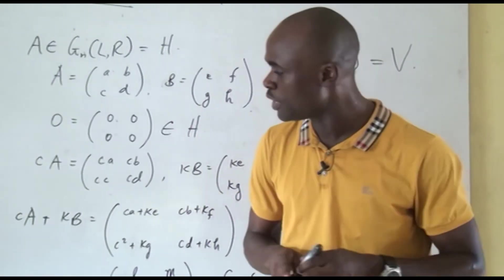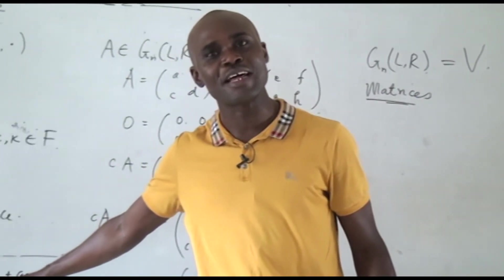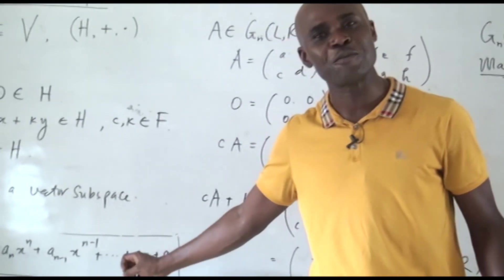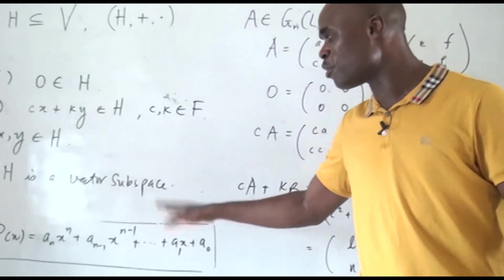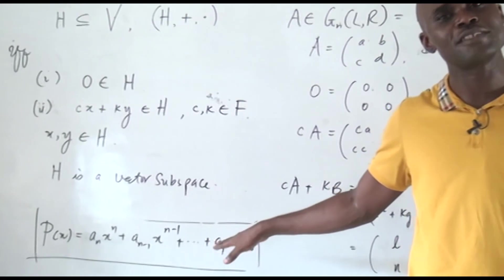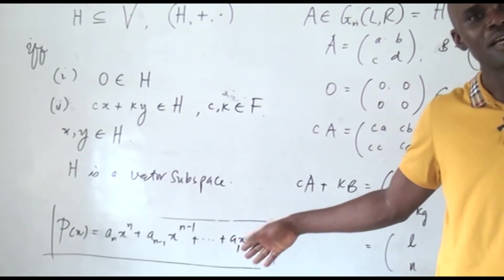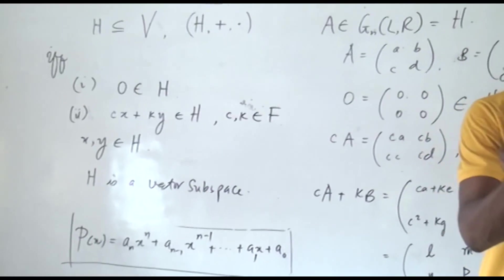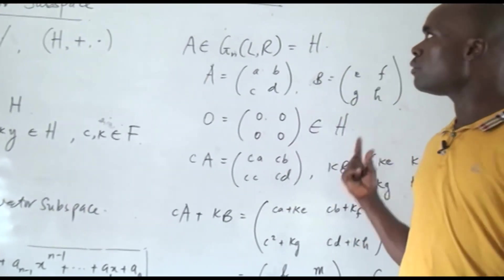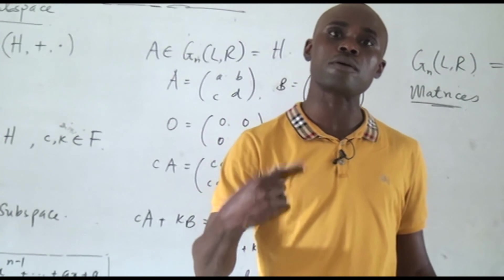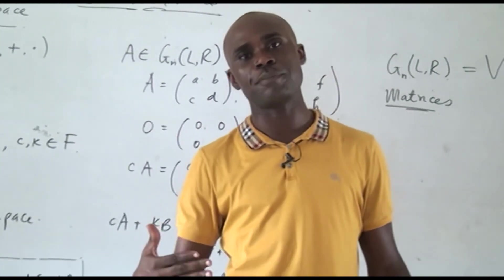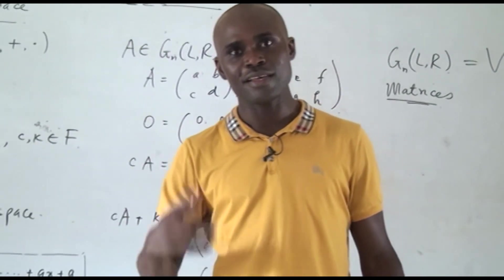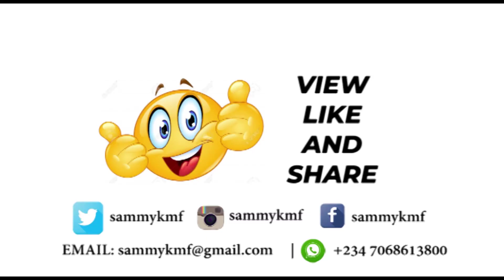Now, I will give you an assignment to prove that polynomials are also vector spaces. So, you have the zero polynomial, which I've already given you. So, multiply this with two different constants of the field, add them together, you see, you're going to see what you're going to have as a result. Now, in the part three of vector spaces, I'm going to talk about linear combination, linear independence, and linear dependence. Thank you. Bye.